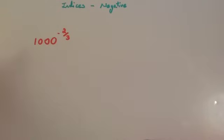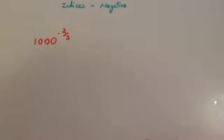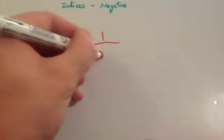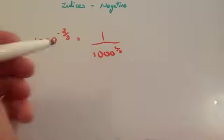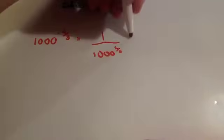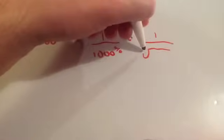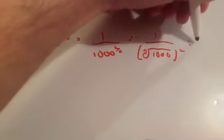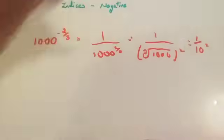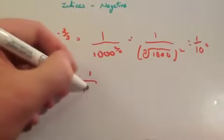Our last example: if we had 1,000 to the power of minus two thirds, that would be equal to 1 over 1,000 to the power of two thirds — making the power positive and putting it on the denominator. Then you do 1 over the cube root of 1,000 squared. The cube root of 1,000 is 10, so you get 1 over 10 squared, which is 1 over 100.